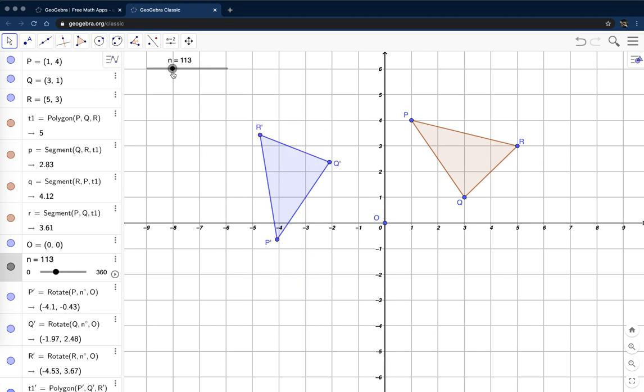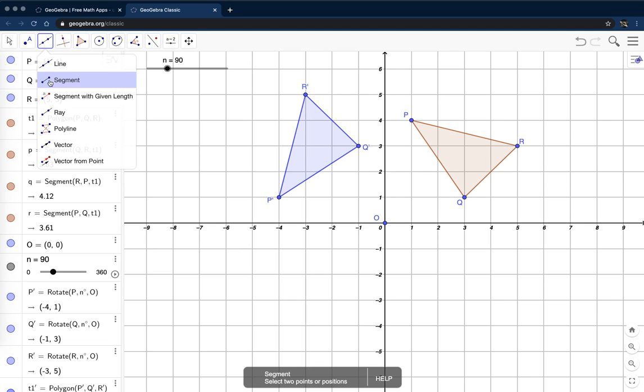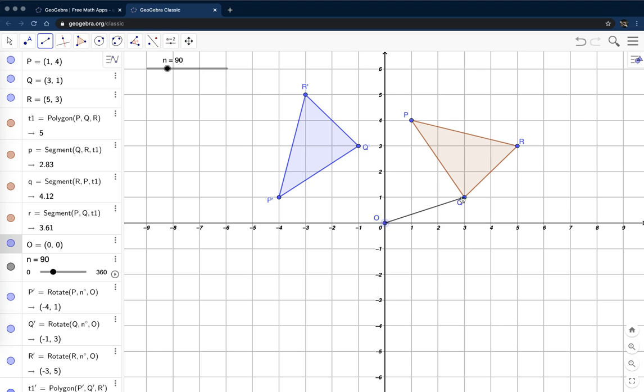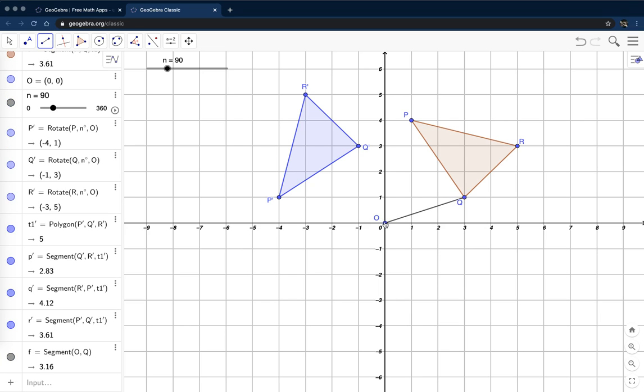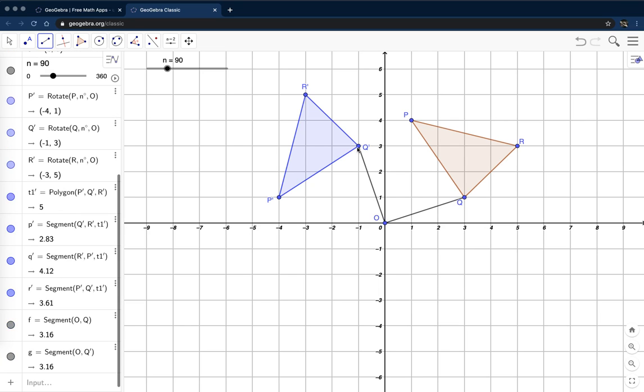Great. So what else might we want to show here? Well, we might want to show the angle of rotation from Q to Q prime. So let's come over to the segment tool and let's draw a segment from the origin to Q and from the origin to Q prime.